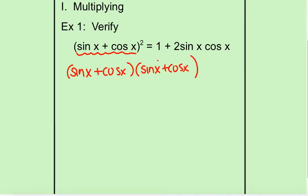So I'm going to foil: first, outside, inside, last. So first would give me sine squared of x. Outside would give me the sine of x times the cosine of x. Inside would give me the sine of x cosine of x. Last would give me cosine squared of x.